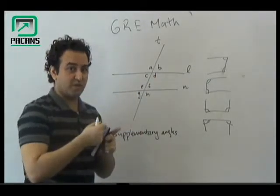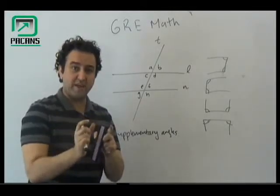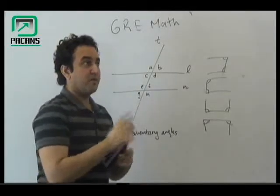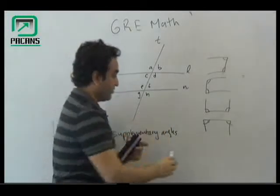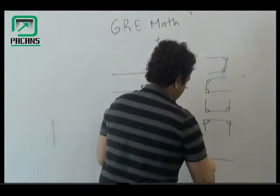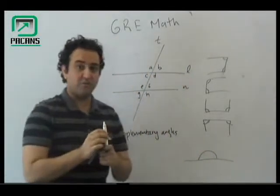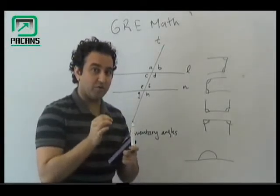Can you tell me any other angles over here which would be supplementary? Well, we know one thing that whenever we form a line, all the angles which are going to be formed on the line are going to be supplementary.